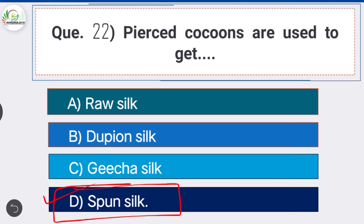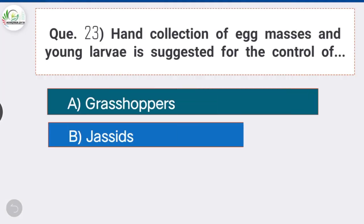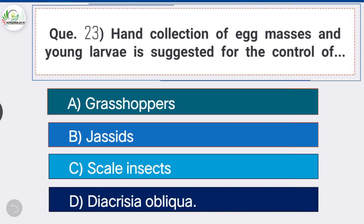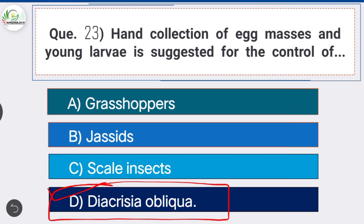Question number twenty-three: hand collection of egg masses and young larvae is suggested for the control of — option D is the correct answer — Diacrisia obliqua. The Bihar hairy caterpillar, Diacrisia obliqua, is a polyphagous pest; fully grown larvae devour the entire foliage, flowers and growing points of the plant.